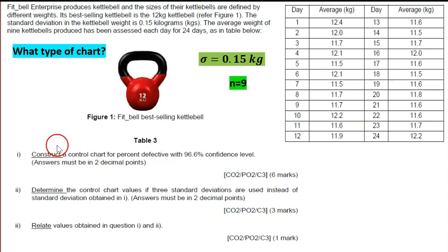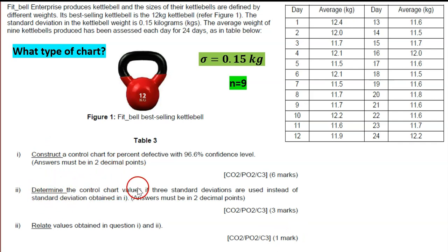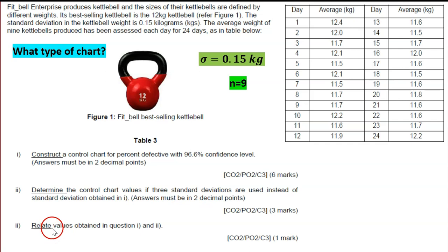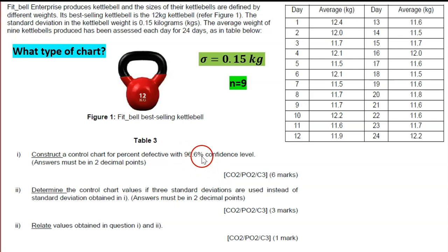Construct means you need to draw. Check to 2 decimal places. We need to determine the control chart values if using three standard deviations, which means Z = 3. Also for 96.6% confident interval we need to find Z, and then compare these two results.